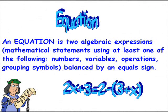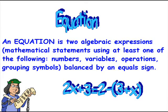The king's mathematician decided that an equation can be defined as two algebraic expressions — mathematical statements using at least one of the following: numbers, variables, operations, or grouping symbols — balanced by an equal sign.